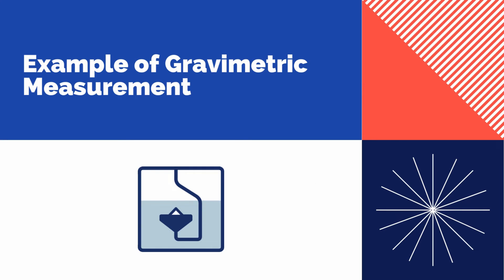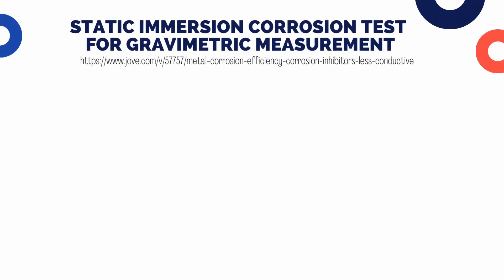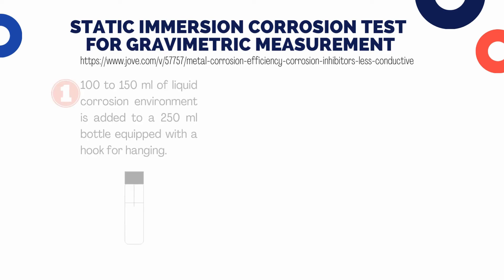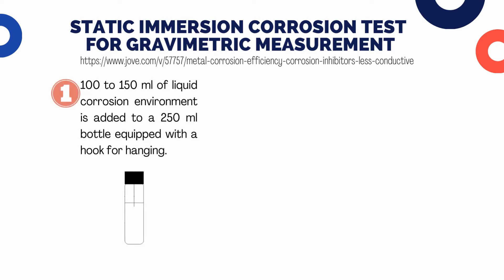Here is a simple example of gravimetric measurement used to measure the corrosion rate. The example is taken from an internet journal done by the University of Chemistry and Technology Prague. To test static immersion corrosion of metal-liquid systems, fill a 250-milliliter container with 100–150 milliliters of the tested liquid corrosion environment and a hook for hanging an examined sample.